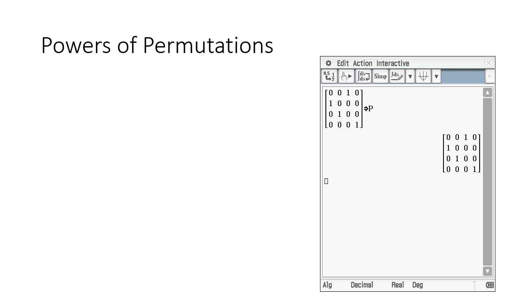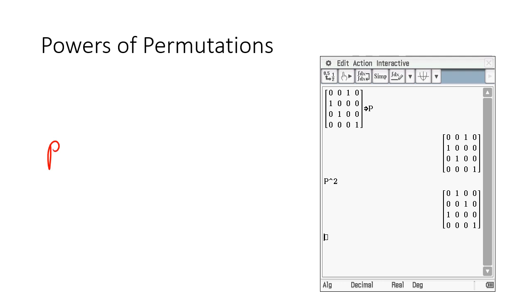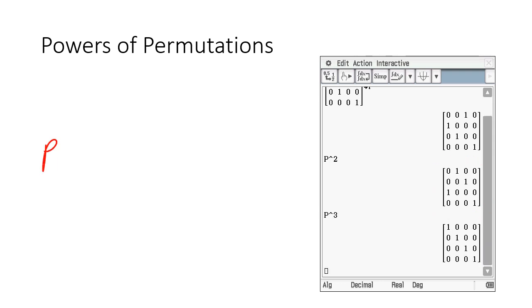For powers of permutation matrices: P to the power 1 is itself. P squared gives another permutation matrix. P cubed equals I. Any permutation matrix will eventually, to some power, become I. So an exam might ask: what power do you need to raise this permutation matrix to get I? Just try it in your calculator. In this case, P cubed equals I, so the answer is 3.